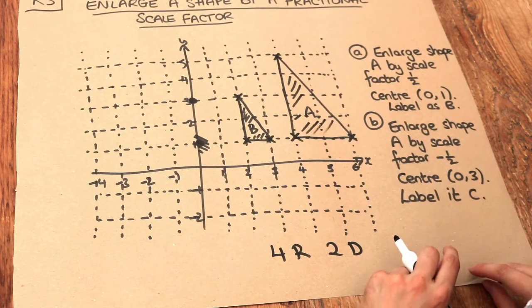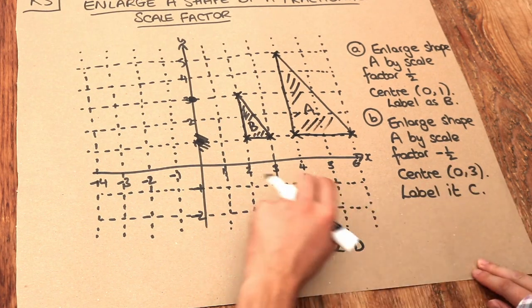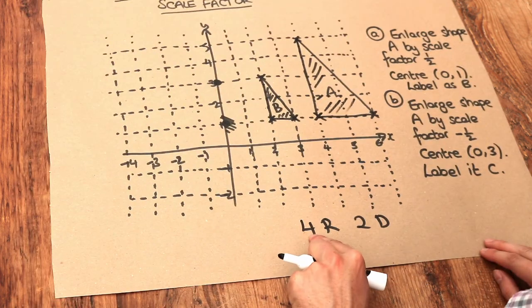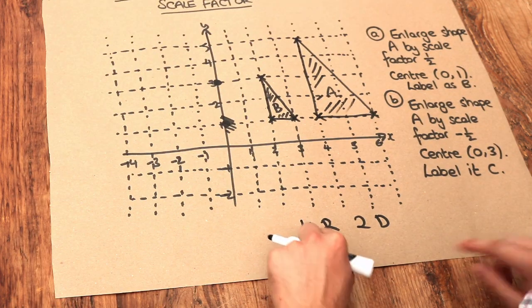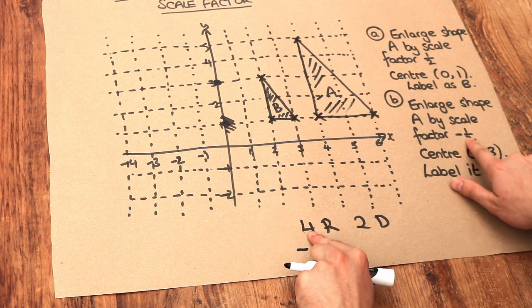We multiply each count by negative half. If we multiply 4 by negative half, positive times negative is negative, so it'll be a negative value. What's 4 times half?